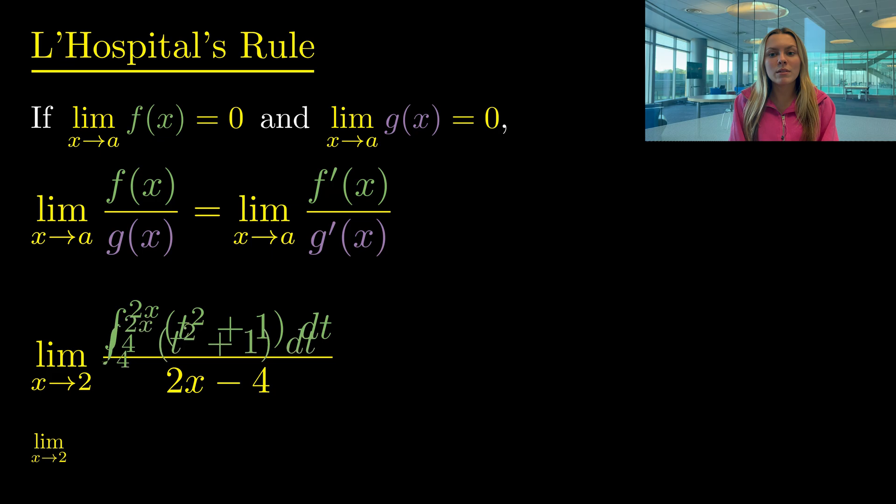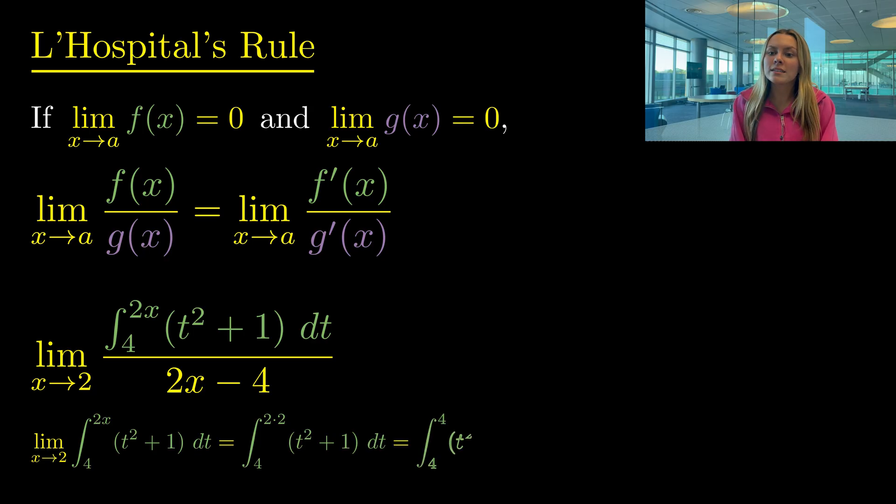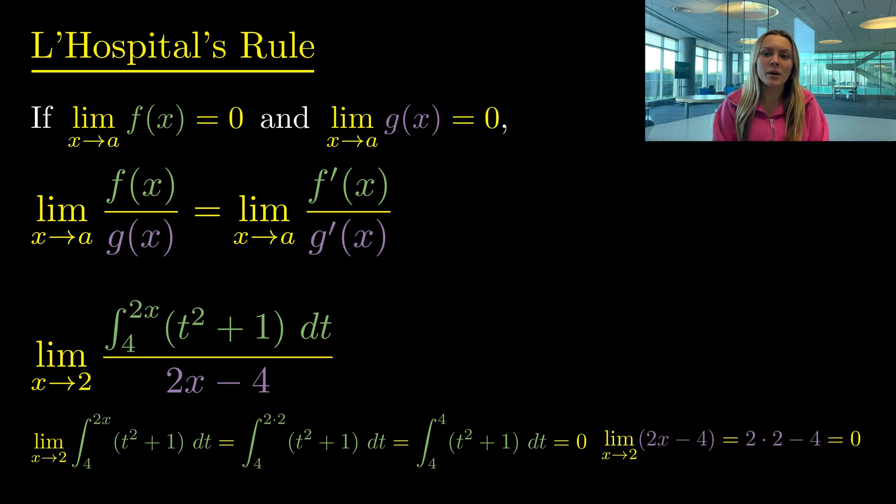Notice that for our numerator, which is our integral, its limit can be found to be 0, as we can plug 2 into our x, which resides in the upper limit of our integral, and we will have an integral from 4 to 4, which is 0, as there is no area between 4 and 4. And now to check the denominator of 2x minus 4, we plug in 2 into the denominator, so its limit will be 2 times 2 minus 4, which is also 0. So now we can employ L'Hôpital's rule.